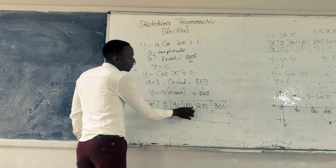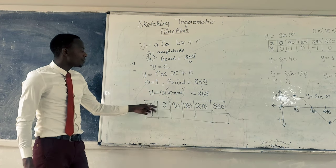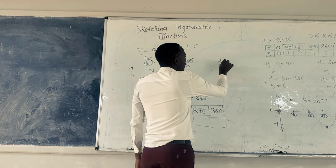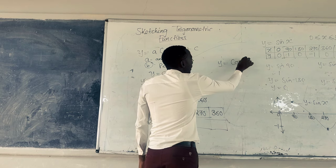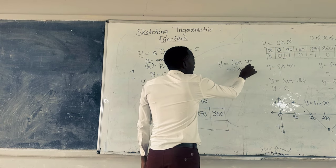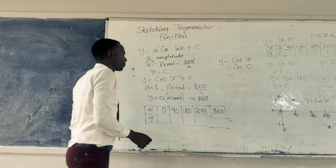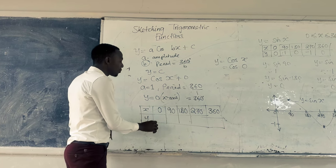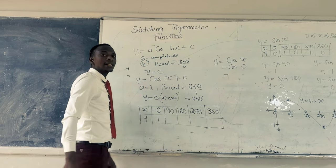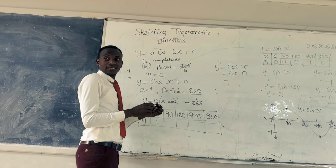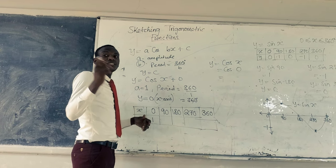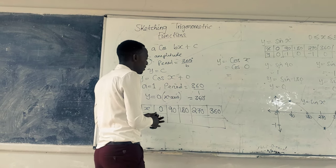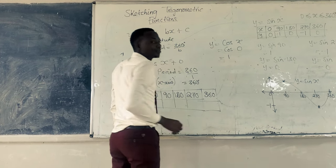Now in order to fill in these values, we have already found the values for X, so what are we going to be doing? If X is 0, Y equals cos X. What is cos 0? Cos 0 is 1.